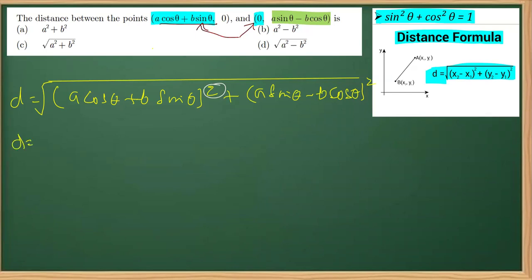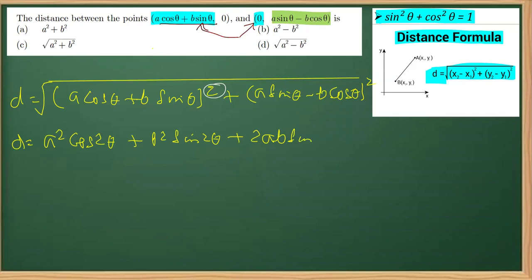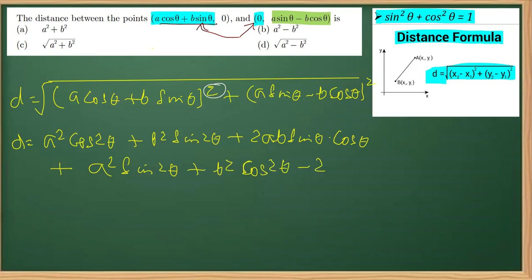In the next step, expanding using the identity (a + b)²: this gives a² cos²θ + b² sin²θ + 2ab sinθ cosθ. Then adding the expansion of (a sinθ − b cosθ)² using (a − b)²: that gives a² sin²θ + b² cos²θ − 2ab sinθ cosθ.